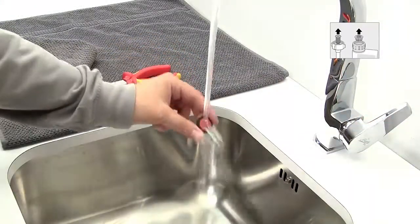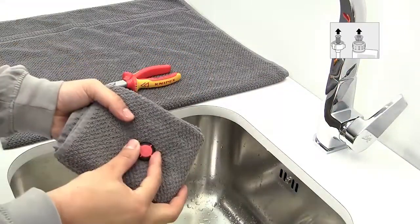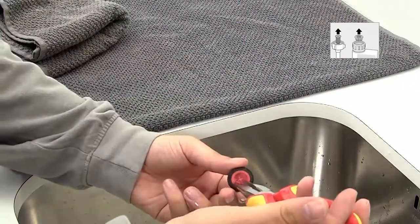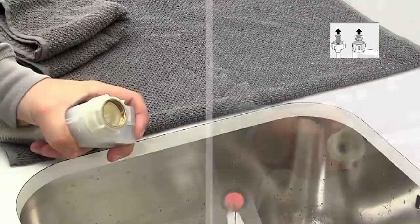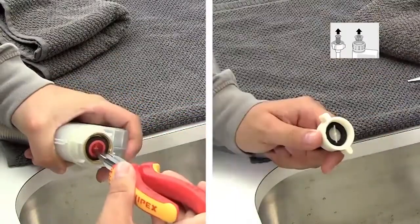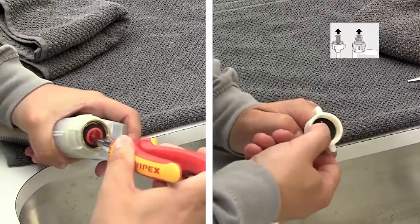You can now clean the filter under the tap. The filter should be securely reattached to the hose using the pliers, ensuring it is fully and securely pressed in. Hold it in the middle and not the side to avoid damaging the filter.